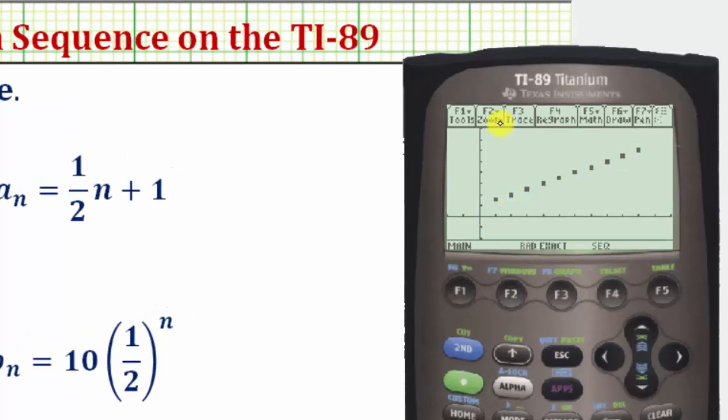From here, if we press F3 for trace, notice here telling us the value of n is one as well as x, and over here this would be the term in the sequence. One point five is the first term in the sequence. If we press the right arrow, we're going to scroll along the points on the graph and see the terms of the sequence here at the bottom. So here are the first ten terms of the given sequence.